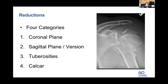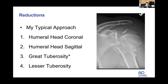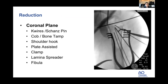My typical approach is to start with the coronal humeral head reduction — take it out of varus or valgus and restore normal position — then correct the sagittal plane, reduce the greater and lesser tuberosities, and address calcar reduction as part of the coronal plane. For coronal plane reduction there are many tools: Schanz pins and K-wires are most common.